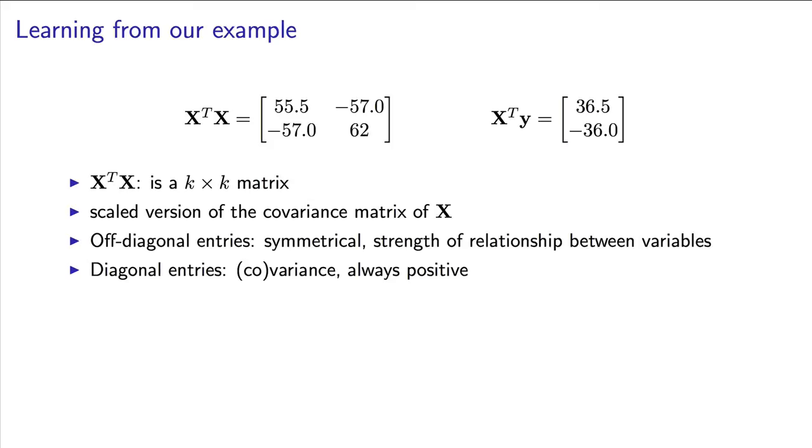Because the diagonal entries in X transpose X are variances, they should always be positive. Variances are by definition positive values. And the off-diagonal elements in X transpose X will always be symmetrical. Once you've calculated the upper diagonal part, you can just copy the values over to the lower diagonal part. Now here's a question I want to leave for advanced students. What will the X transpose X matrix look like when the variables X1 and X2 and so on are entirely uncorrelated with each other? What will you observe in those off-diagonal entries? You'll see the answer to that coming up in the next module, but you should be able to guess what it is now.